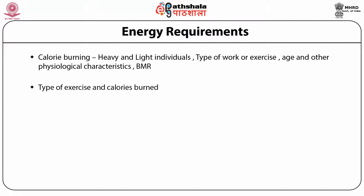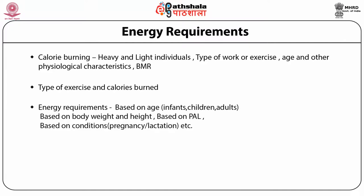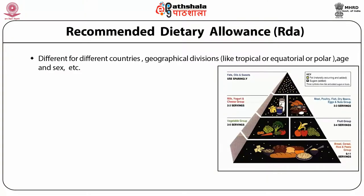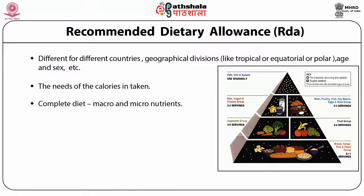Energy requirements are based on age — whether the subject belongs to the infant, children or adult age group — and on body weight and height, and on conditions like pregnancy and lactation. Recommended dietary allowance differs for different countries, geographical divisions such as tropical, equatorial or polar regions, and also varies according to age and sex. Complete diet — macronutrients and micronutrients — also affects the recommended dietary allowance.